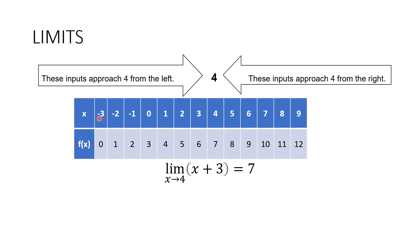These are the inputs coming from the left approaching the value of 4. And these are the inputs for x as x approaches the value of 4 from the right: 9, 8, 7, 6, and 5. If we are going to substitute these values into f of x, coming from the left, the value of our function goes 0, 1, 2, 3, 4, 5, and 6. And as our x approaches 4, the value of our f of x is approaching the value of 7.